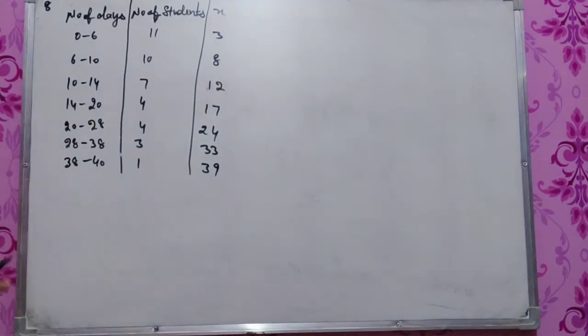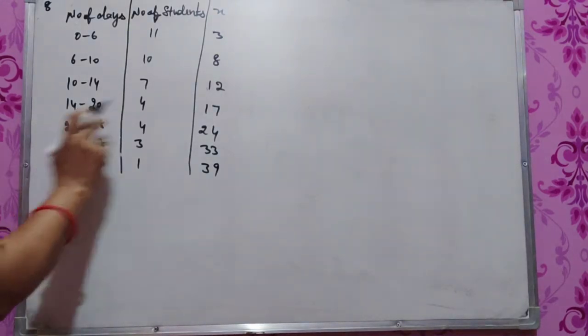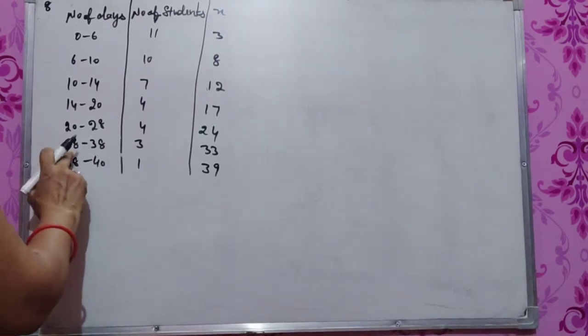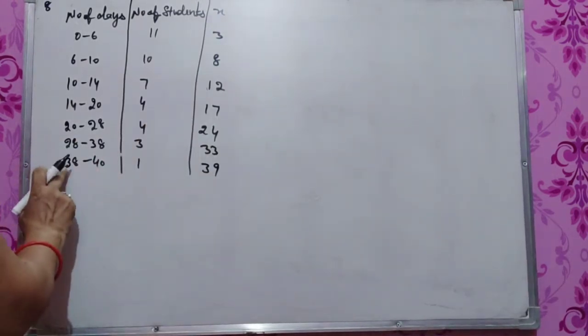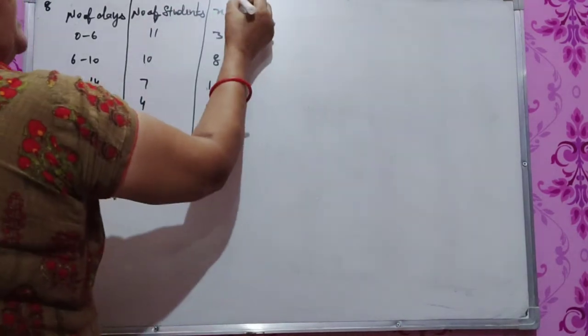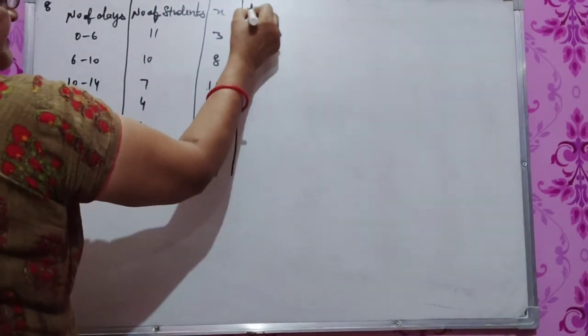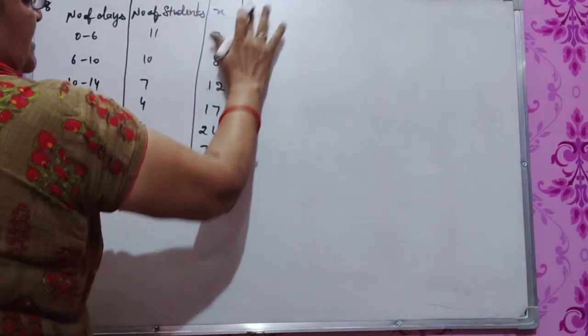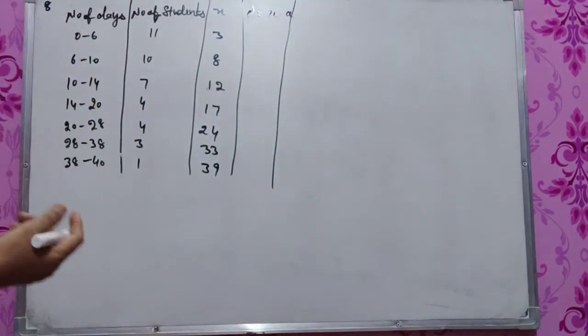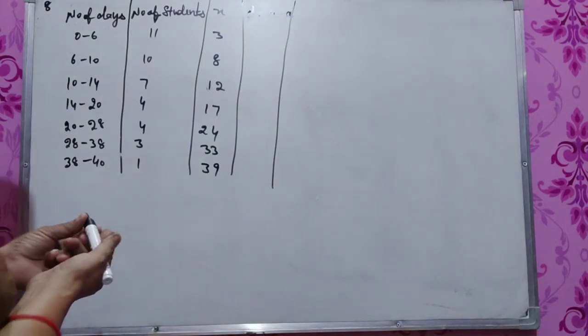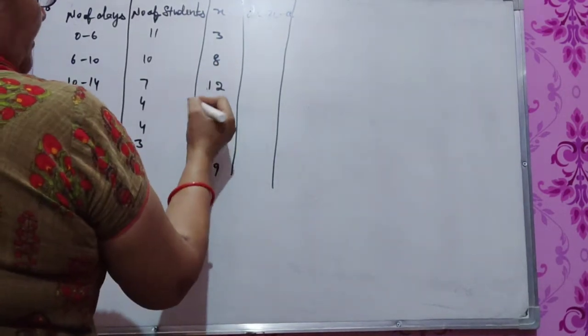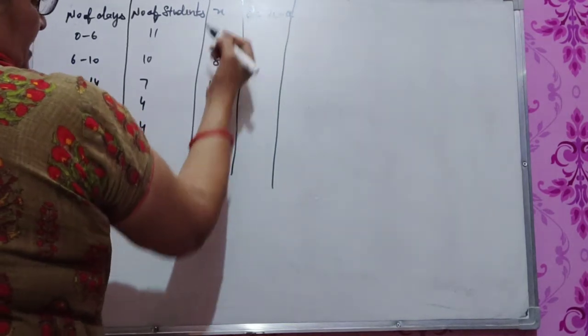20 and 28 plus 48 equals 24. 28 and 38 plus 66 divided by 2 equals 33. 38 plus 40, 78 divided by 2 equals 39. So we get 39.